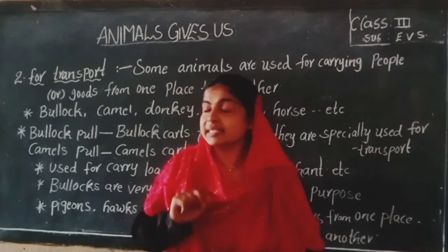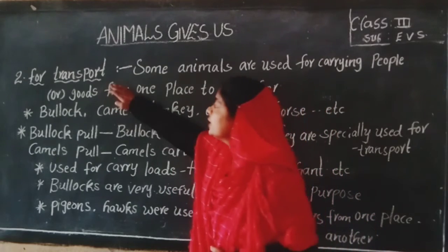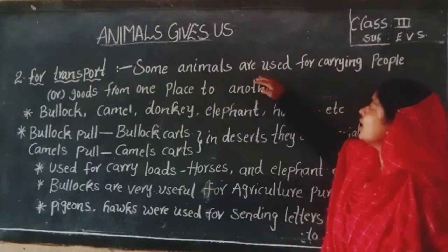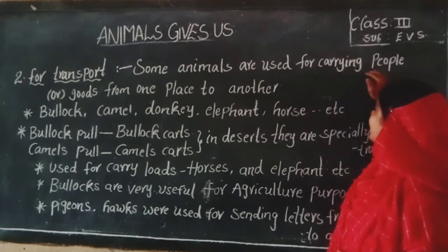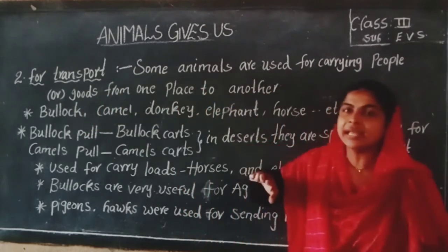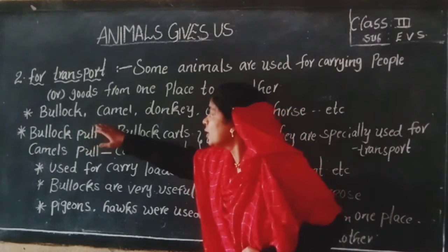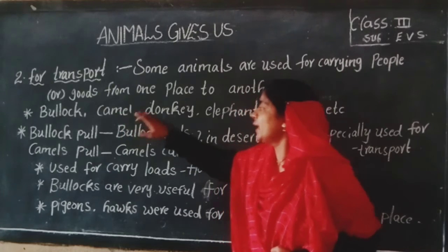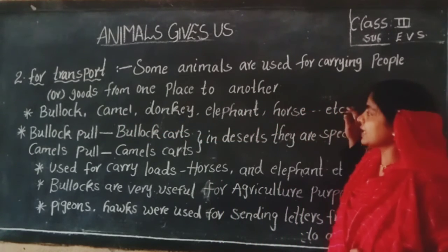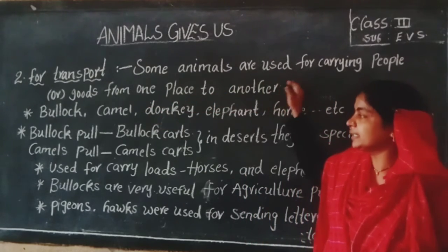In this class, we are also discussing about transport. Some animals are used for carrying people or goods from one place to another. For example, bullocks, camel, donkey, elephant, horse, etc.